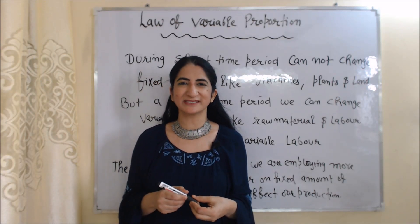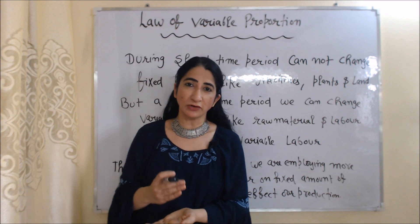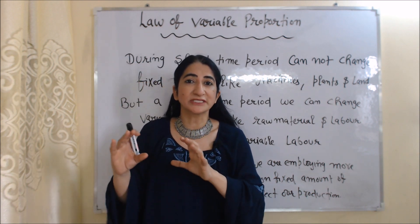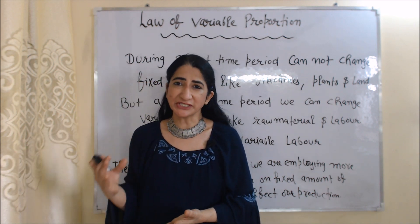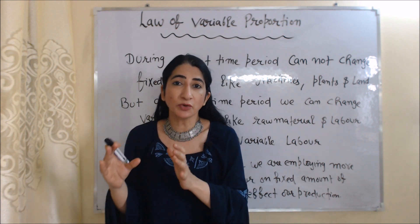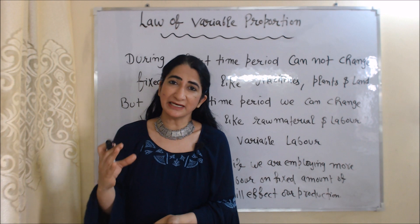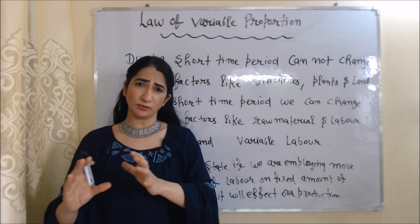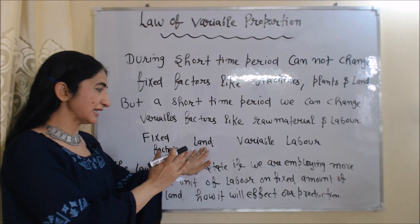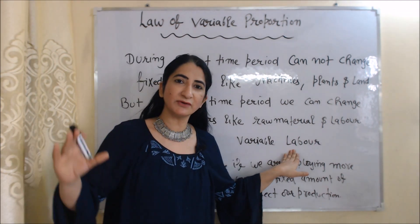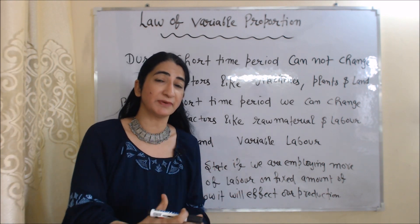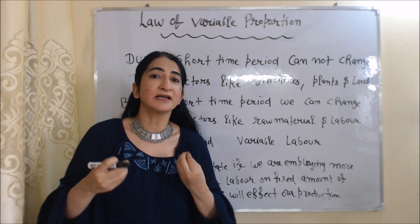Hello everyone, my name is Mini Sethi. Today we are going to talk about the Law of Variable Proportions. This is a short-run concept — in the short time period we cannot change our fixed factors like machines, plant, and land, because changing these factors requires more time and effort. But in the short run we can change our variable factors like labor and raw material.